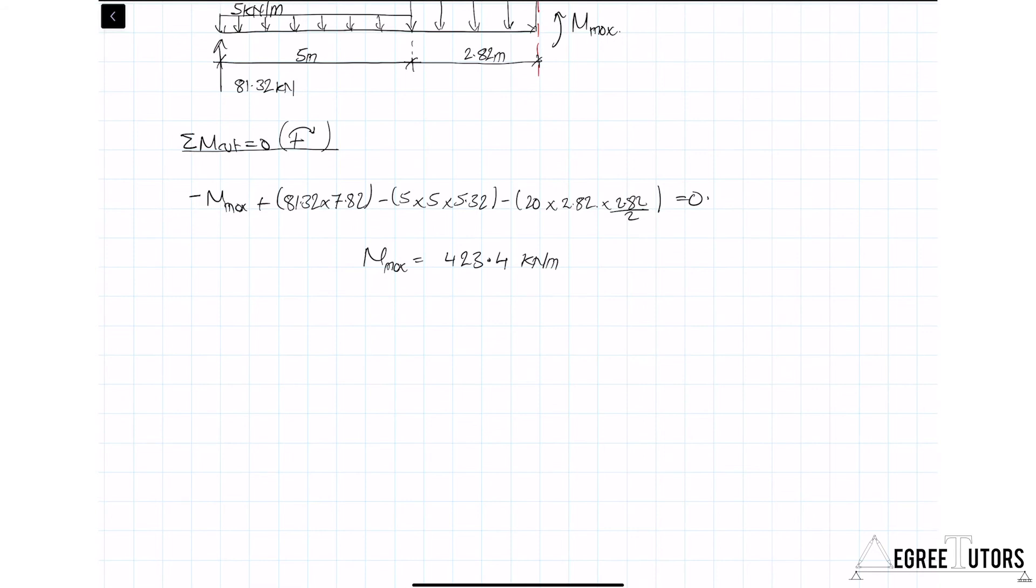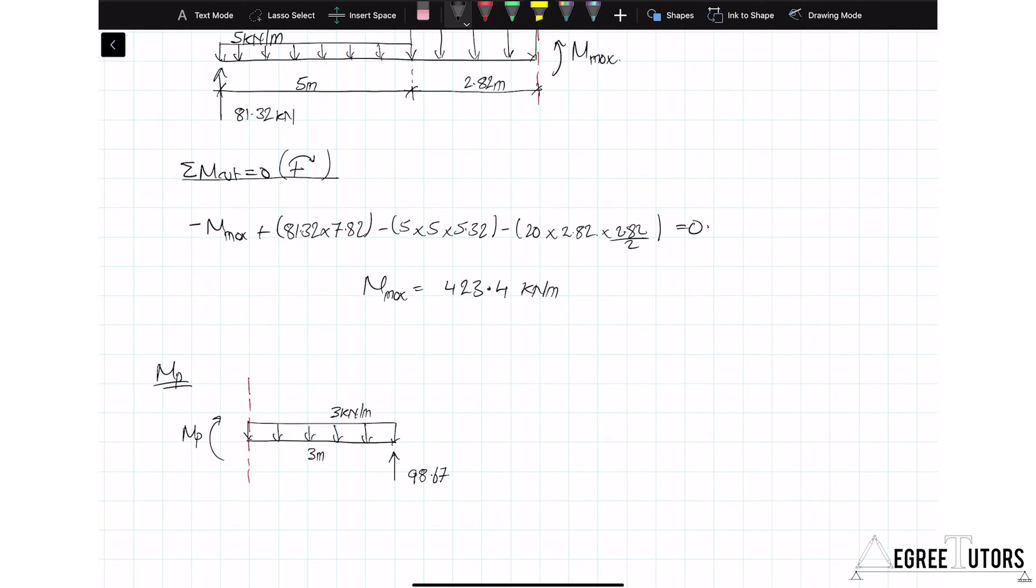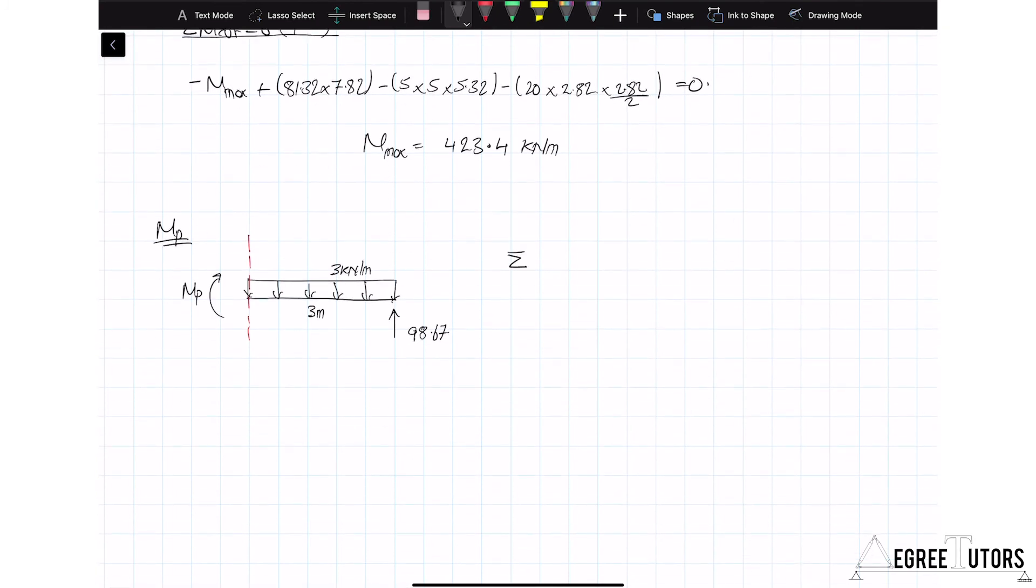But to complete the question, to finish this thing off, I'm going to work out what M_p is by taking a second cut. This is a much shorter, much smaller substructure to analyze. So let's again take the sum of the moments about the cut. We have M_p - 98.67 × 3 meters + 5 × 3 × 3 × a lever arm of 1.5 equals 0. We can solve all of that to get M_p equal to 282.5 kN·m.